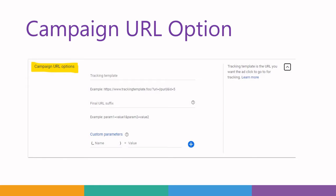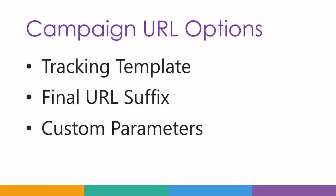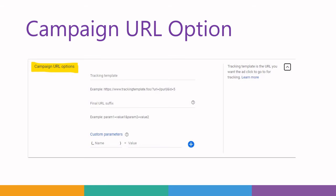Whenever you are creating a new campaign, you come across the option called Campaign URL Options. In Campaign URL Options, you find three options: one is the tracking template, the final URL suffix, and custom parameter. In this video, we are going to see in detail what these options are and how we want to use these resources.